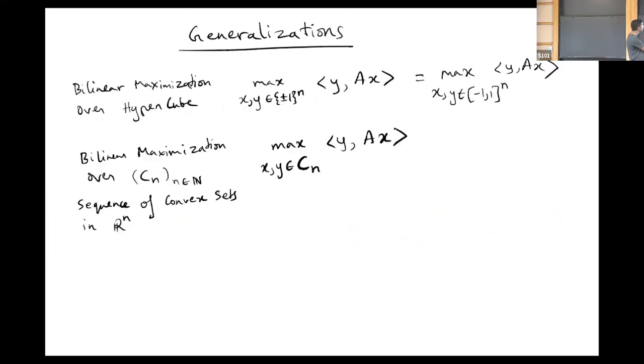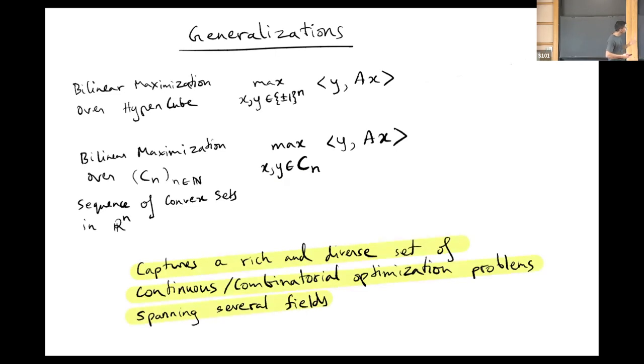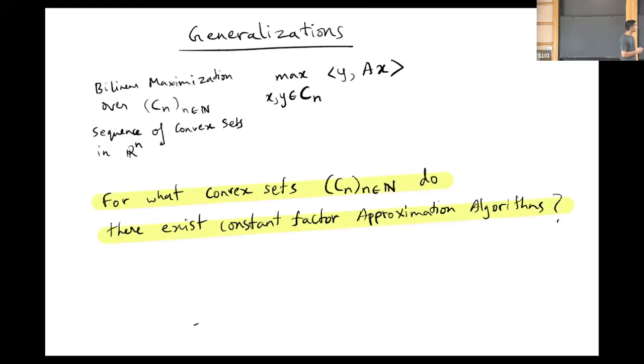This brings us to the final part of my talk, which is generalizations. Note that we can always think of bilinear maximization over the discrete hypercube as equal to bilinear maximization over the continuous hypercube, just because of the bilinear nature of the objective. Now you can ask, why just the hypercube? Can we try and optimize over more general convex sets? So we consider bilinear maximization over a sequence of convex sets in increasing dimension. So CN is in N dimensions. This class of problems is really powerful. It captures a rich and diverse set of both continuous and combinatorial optimization problems spanning several areas. A unified theory of the approximability of this would be useful. So this brings us to the following question: for what sequences of convex sets do there exist constant factor approximations? In recent joint work with Pravesh Kothari, we made some progress on this.